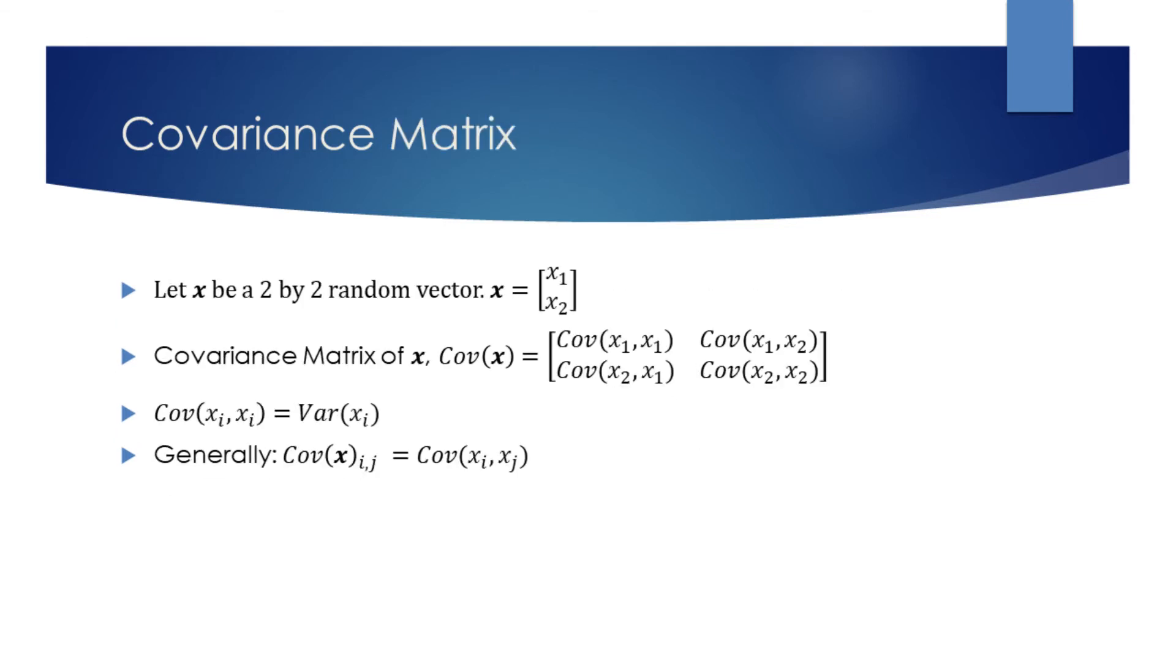The covariance of a random vector is given by its covariance matrix. Let's first examine the covariance matrix of a 2 by 2 matrix X, and then we can generalize.